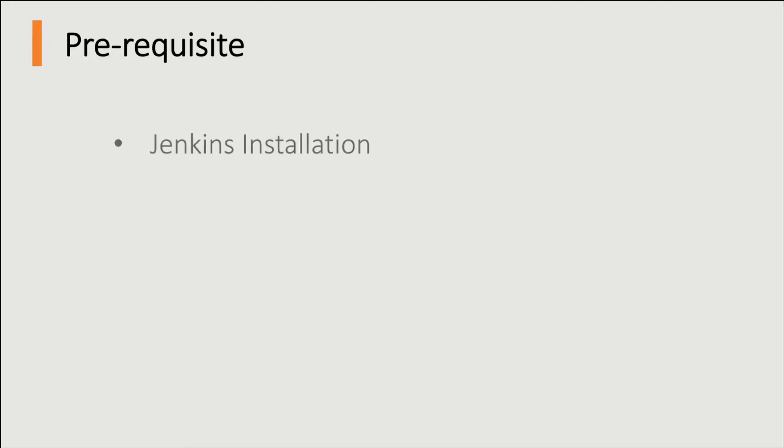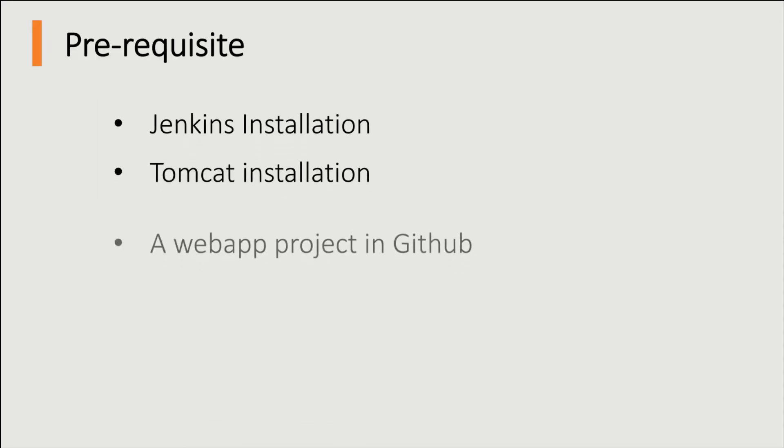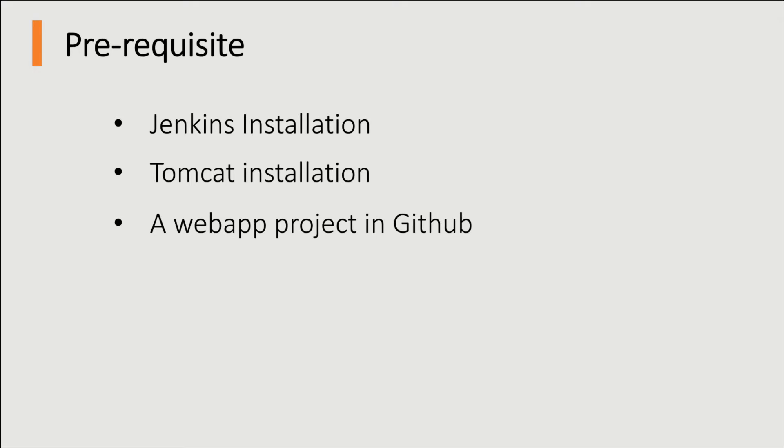For this tutorial you need two things as prerequisites: Jenkins installation and Tomcat installation. If you want to know how to install Jenkins and Tomcat in a virtual machine, please check my earlier videos, and you will also need a web app project in GitHub. You can use my web app project which I will demonstrate in this tutorial.